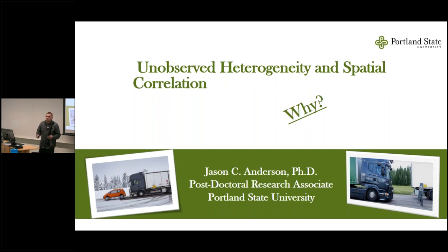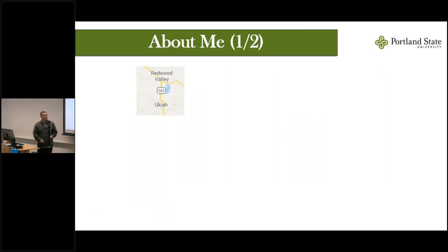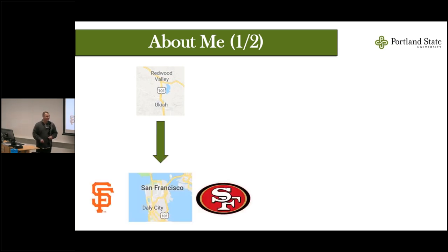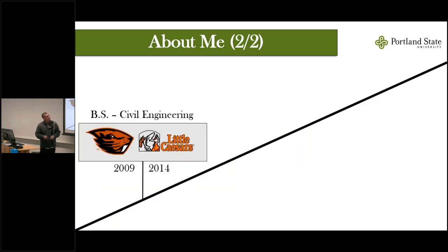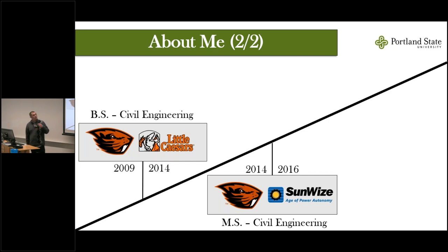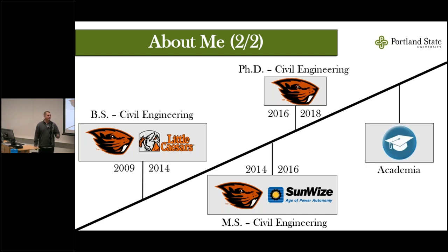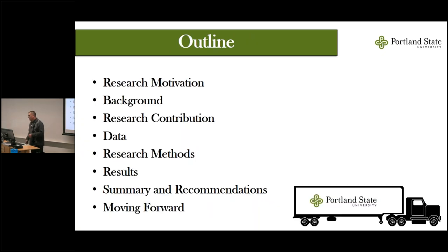Being that I'm new here and many of you don't know me, I wanted to take a quick minute to tell you about myself. I was born in Ukiah, a mid-size town just north of San Francisco, then moved to the Bay Area — home of the Giants and the 49ers. I lived in Sacramento for a while, home of the Sacramento Kings. I started OSU in 2009, got my bachelor's degree, stayed for a master's, then loved Corvallis so much I stayed to get a PhD. Now I'm at the next chapter — a postdoc at PSU, and hopefully a faculty position in the future.